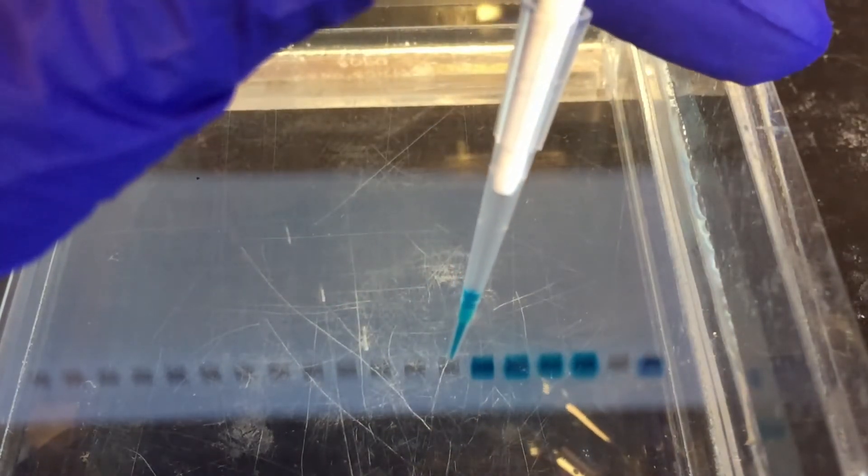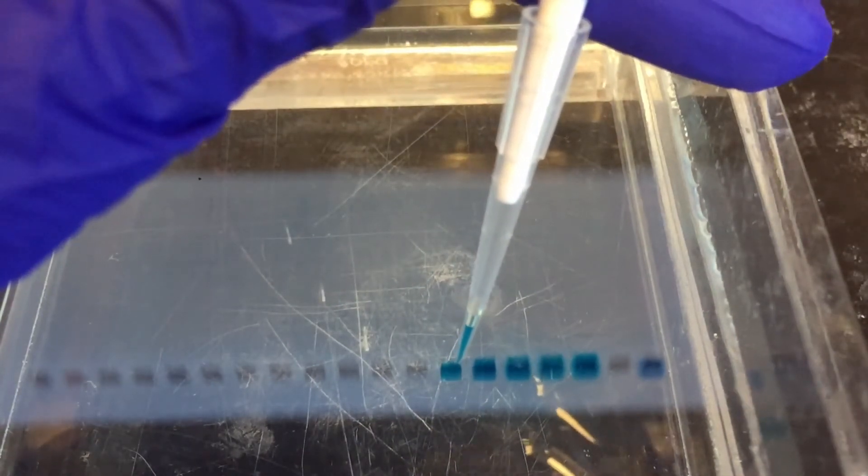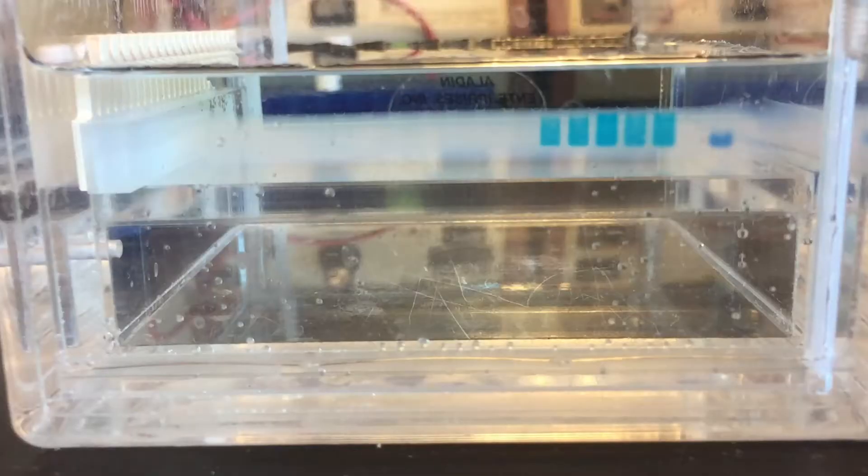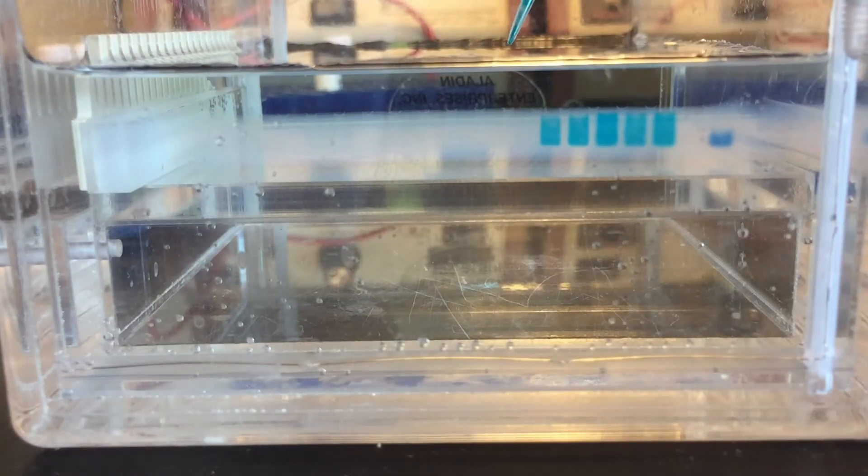You load the gel by placing the tip as close to the bottom as possible. And you slowly raise the tip out of the well as you're expelling the sample allowing it to sort of settle as you go.